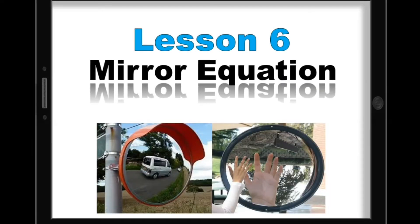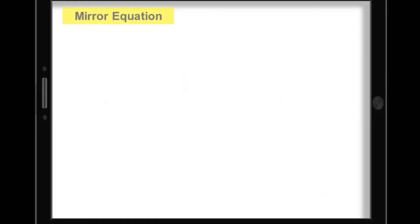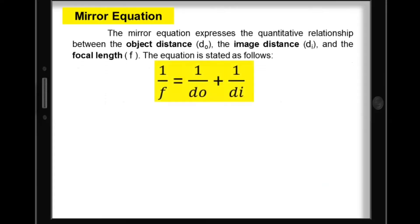Lesson 6: Mirror Equation. The mirror equation expresses the quantitative relationship between object distance, image distance, and focal length, as stated by the equation: 1 over the focal length is equal to 1 over distance of object plus 1 over distance of image.